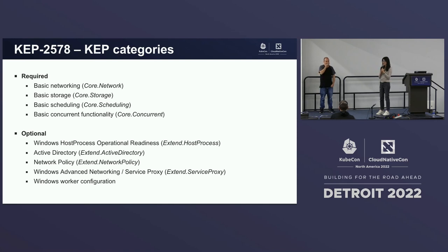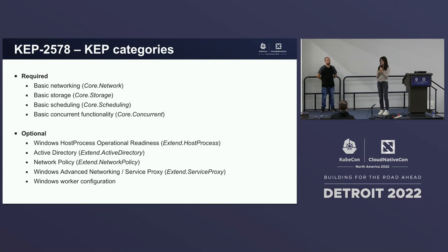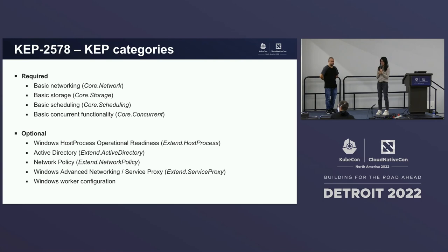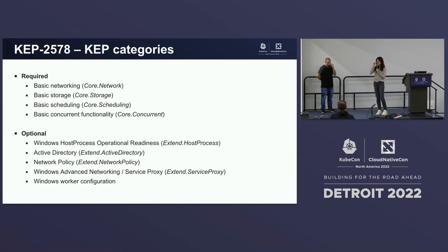For example, if you cannot create a ClusterIP type service in your cluster, it's hard to consider it ready to use. So the first four categories are required for all clusters. The next five categories are optional because they rely on functionality outside Kubernetes scope, such as DNS, Windows Server Edition, and configurations. For example, if you want to run the Active Directory test, you need to set up your AD server, create the domain, create a group managed service account, and join the node to the domain. This kind of setup is not required for all clusters.